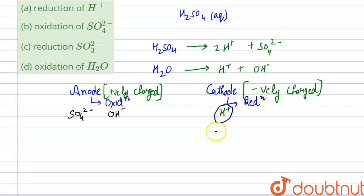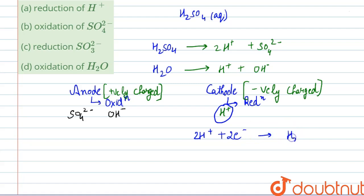At the cathode, reduction takes place and the only species that can undergo reduction is H⁺. So the reaction at cathode will be: 2H⁺ + 2e⁻ → H₂. We can see that the charge and the reaction are balanced, so this is the cathodic reaction — reduction of H⁺ takes place at the cathode.